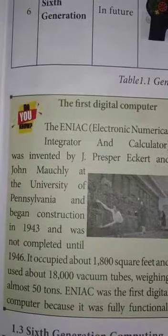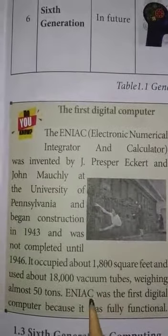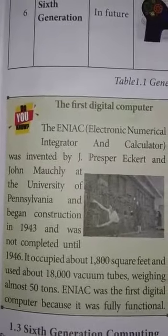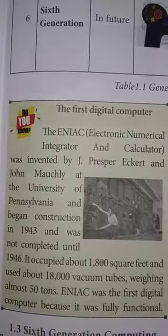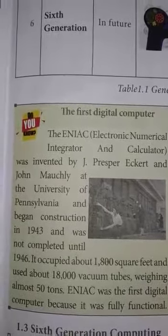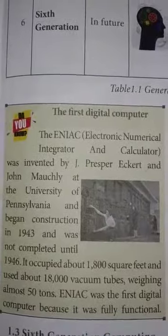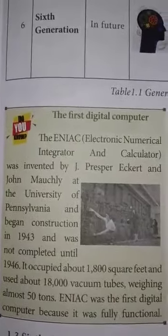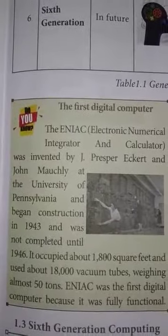The first digital computer ENIAC occupied a total area of 1800 square feet. It used 18,000 vacuum tubes and had a weight of 50 tons. This was the first digital computer used in the world.